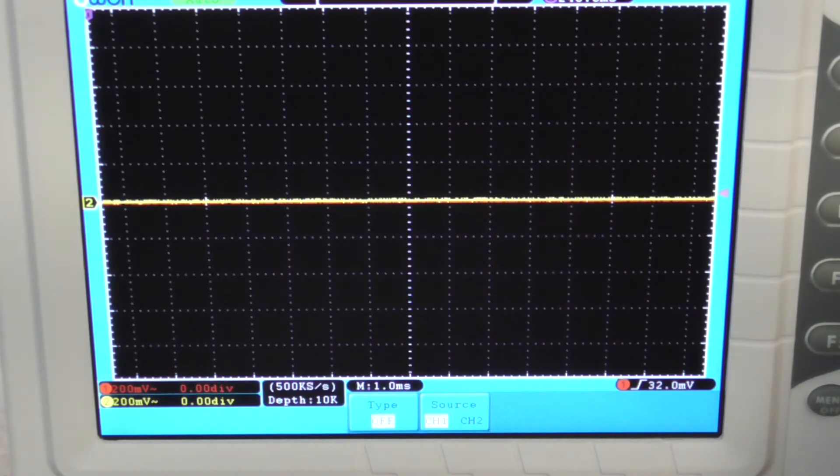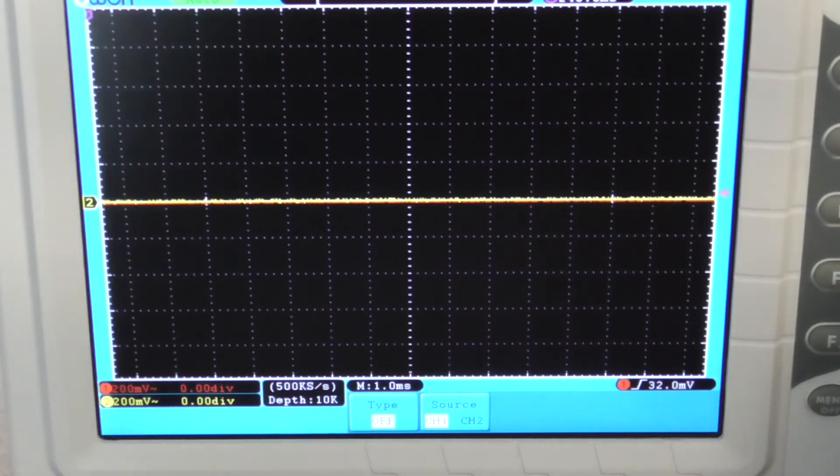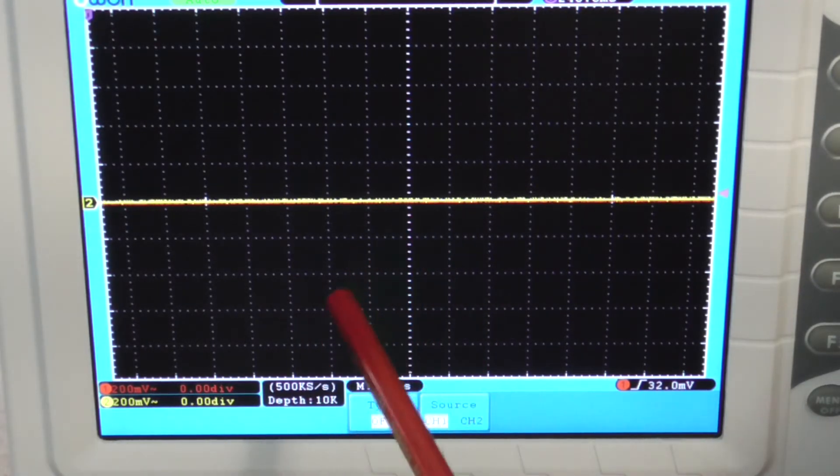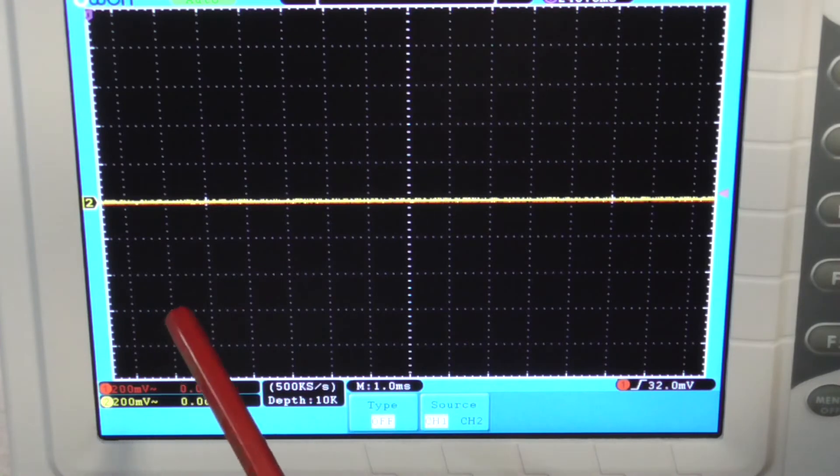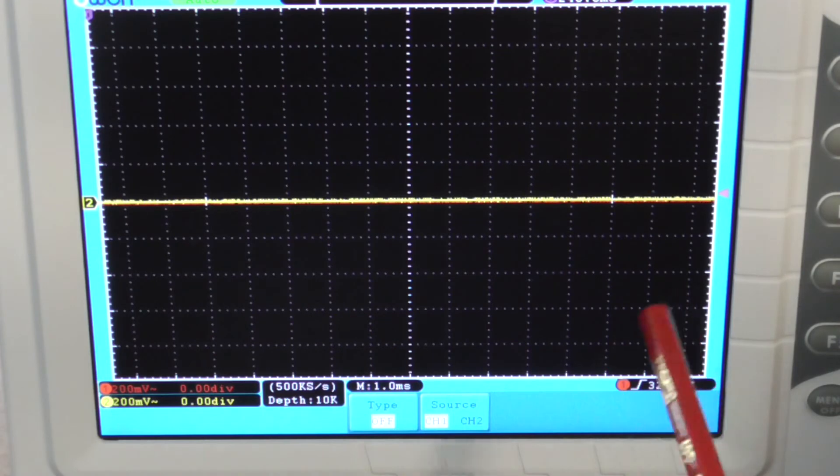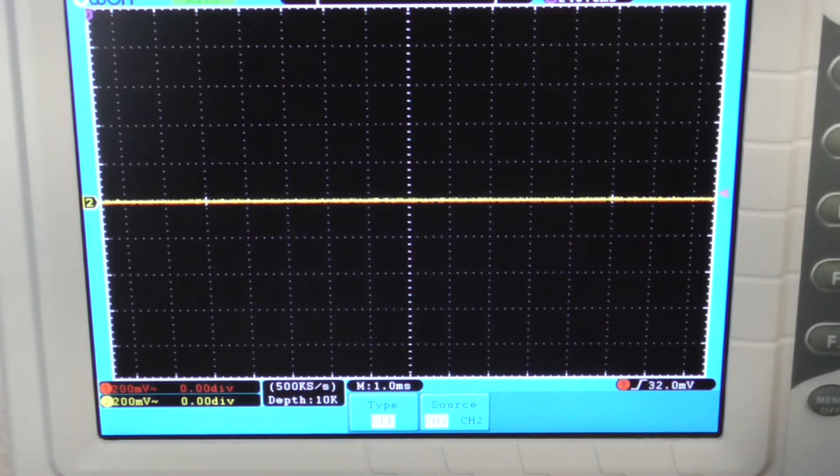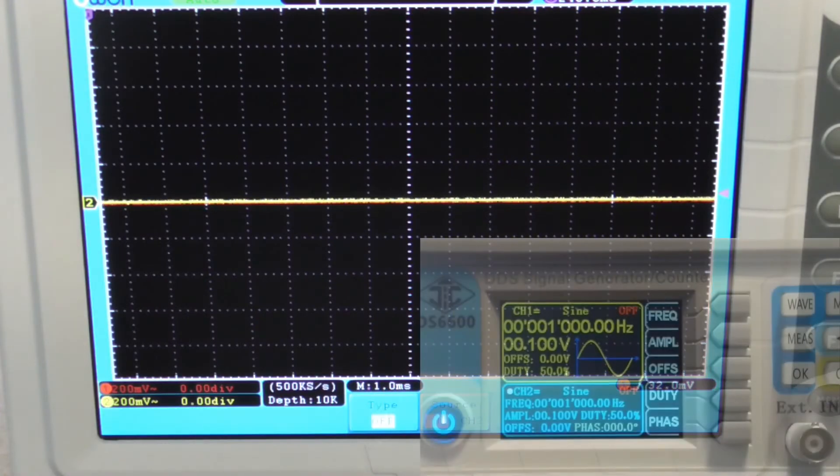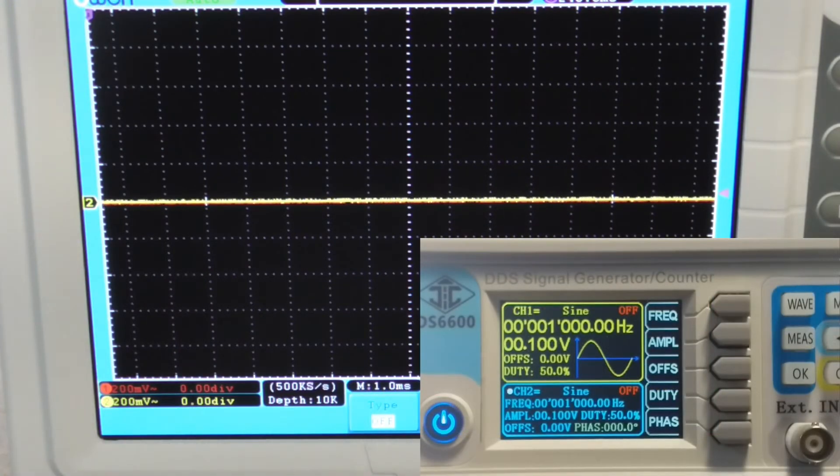OK, so what we've got here now is the scope set up and my function generator set up. Now the scope here is set to 200 millivolts per division and one millisecond in timing. So shouldn't really need to change that. The signal generator is set to one kHz for both channels and 100 millivolts.